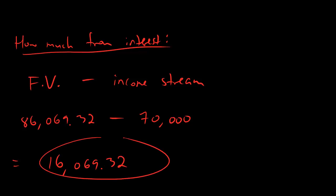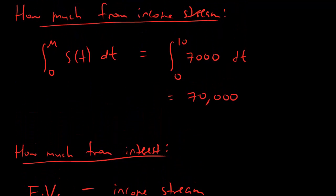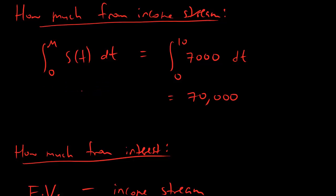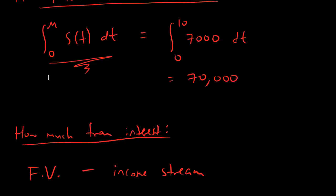One more time: there's a quick formula for how much money you get from the income stream. In this case it ended up being 7,000 times 10, but remember the integral formula because there are examples where you'll have t's inside the income stream. Definitely remember the integral formula, and then if you want how much comes from interest, it's your actual future value number minus the income stream number.